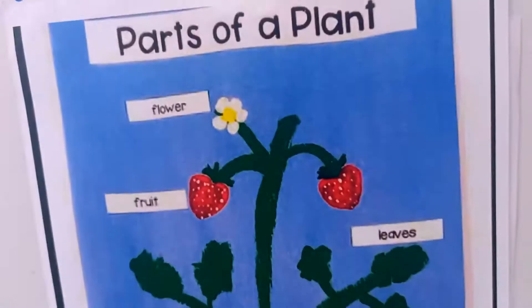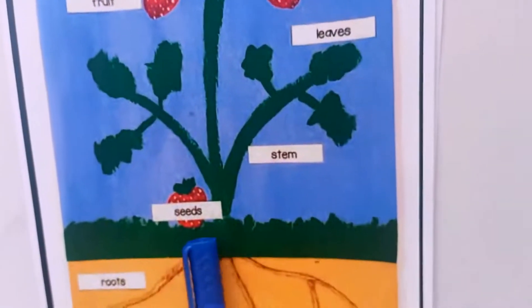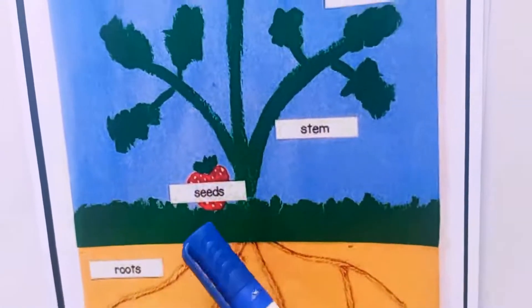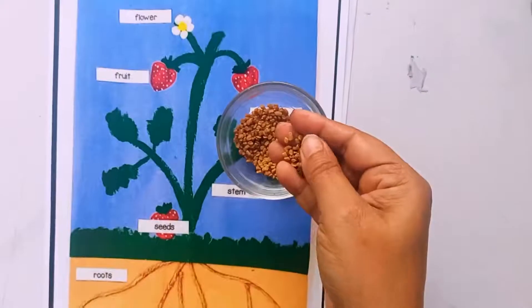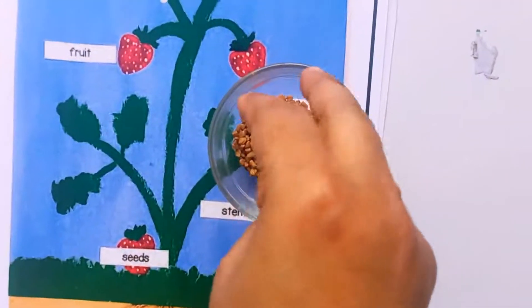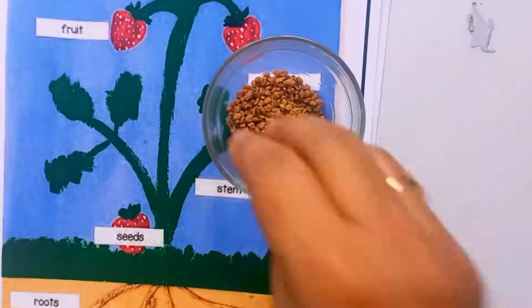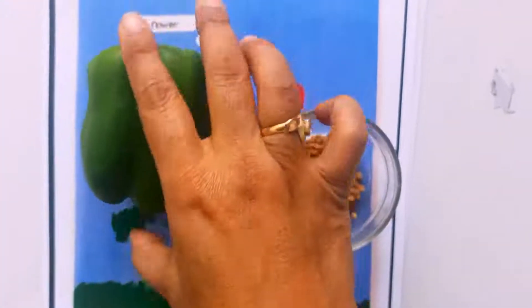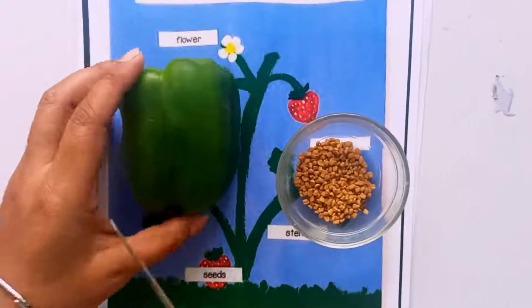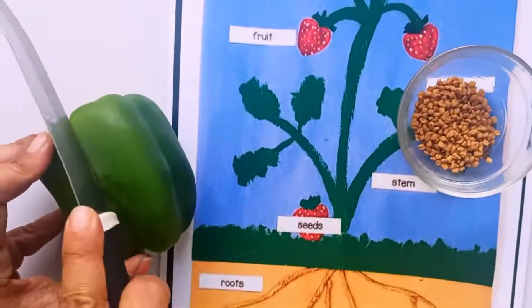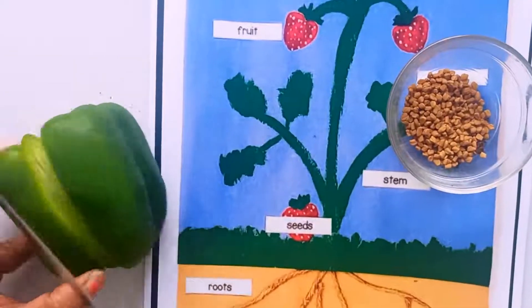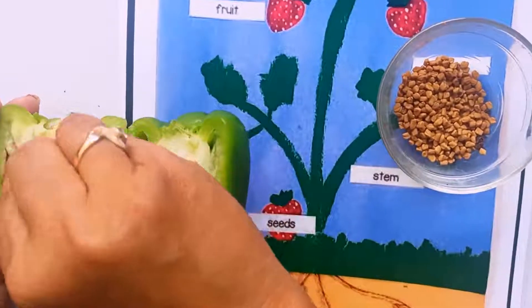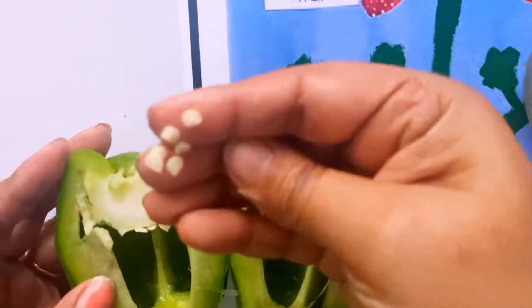Next thing — seeds. Inside the fruit you can see some seeds. Now I am showing you some seeds. These are seeds — methi seeds. And this is a capsicum. If we cut the capsicum, inside that we can see the seeds. These are the seeds of capsicum.